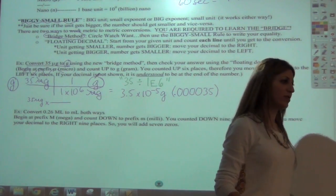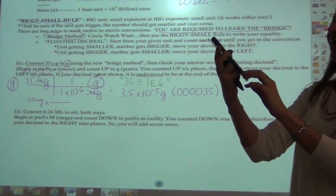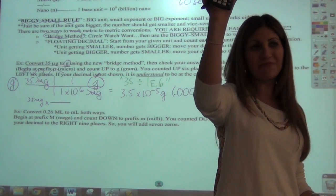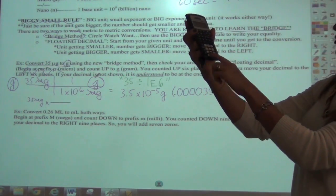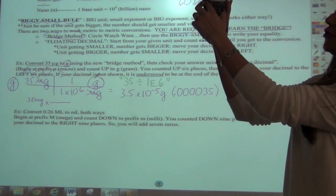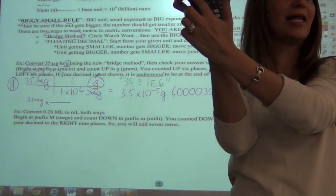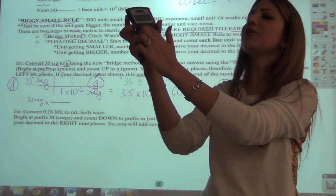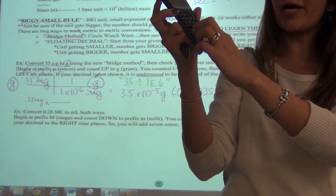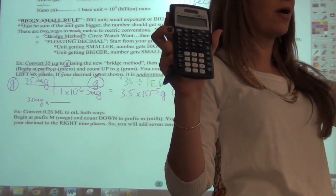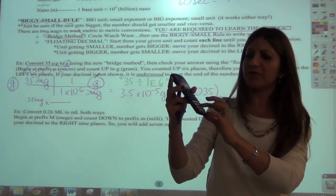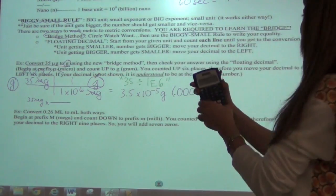Most of you have a TI calculator. Whether it's scientific or graphing, type 35, hit the division sign, type 1, hit the second key (blue, yellow, or green depending on your version), then hit the button right above the 7 — it says EE above it. When you hit that, an E appears in your calculator. Then type 6 and hit equals.